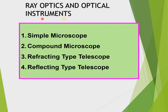The optical instruments in our syllabus are: simple microscope, compound microscope, refracting type telescope — refracting means related to refraction — and reflecting type telescope, which is related to reflection. We will see what these terms mean as we proceed.